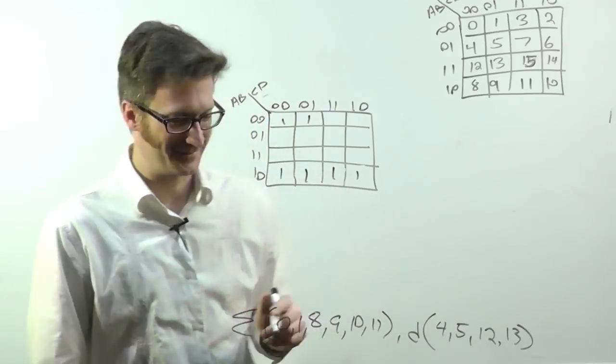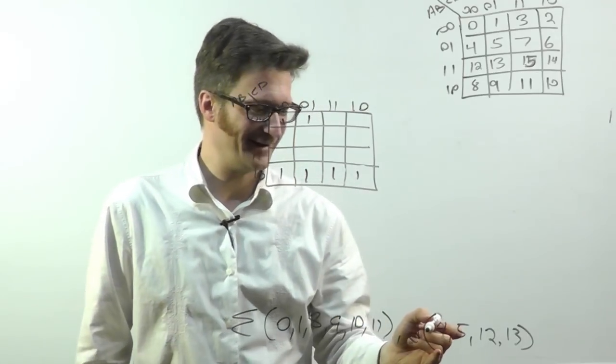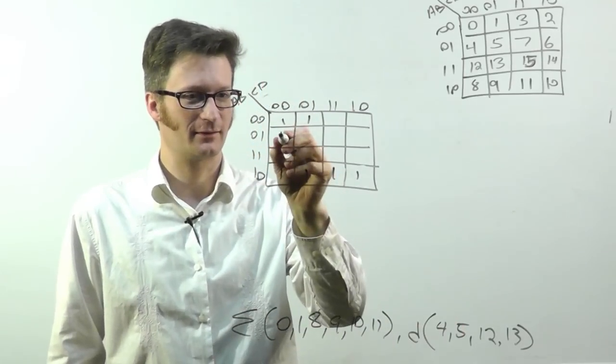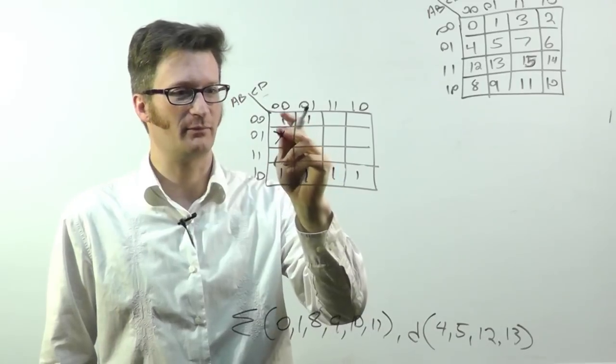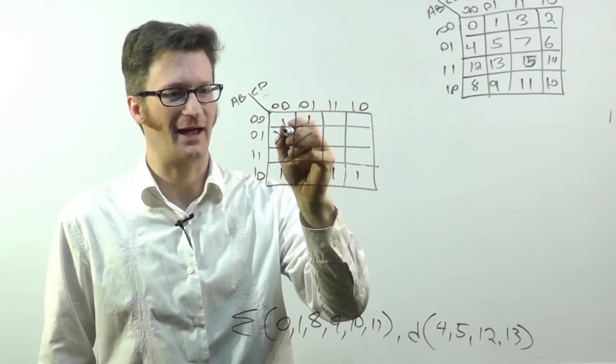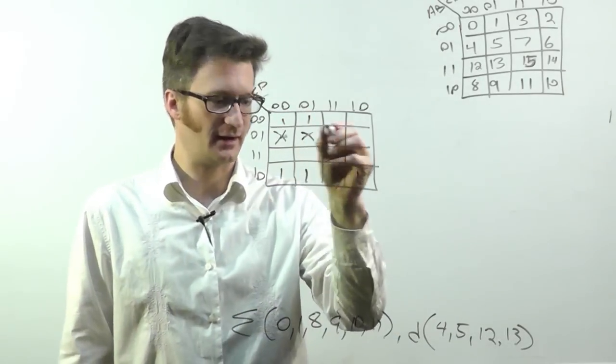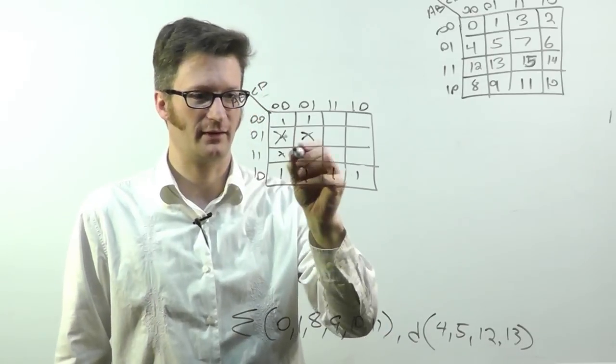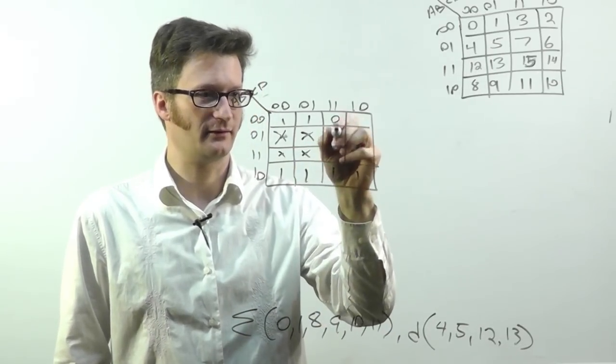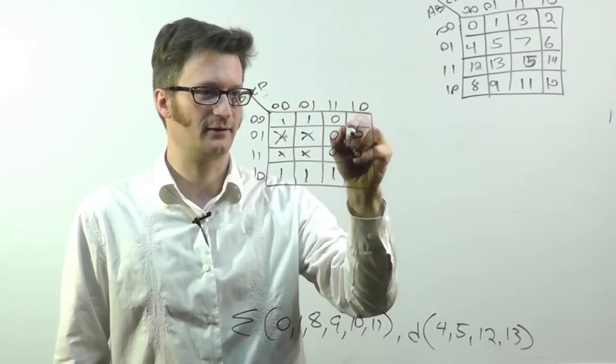How many of you caught that? And then don't cares are 4, so we mark a don't care as with an X, 5, and 12, and 13. And everything else evaluates to a 0.